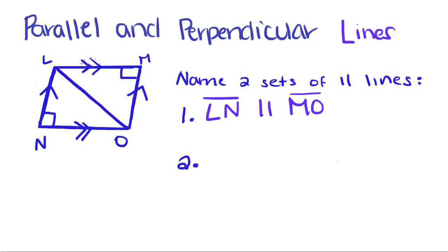The second set, if I look for two tick marks, there is LM and NO. That makes sense, because if I were to extend these lines on forever and ever, they would never intersect. Line LM is parallel to NO.